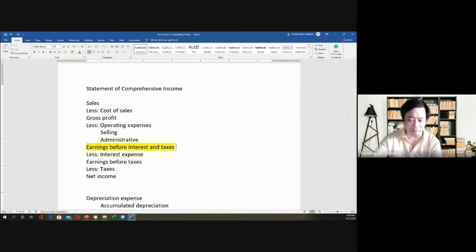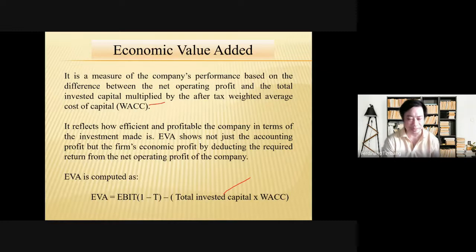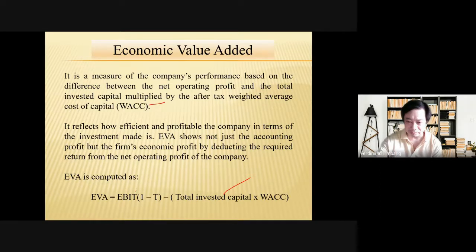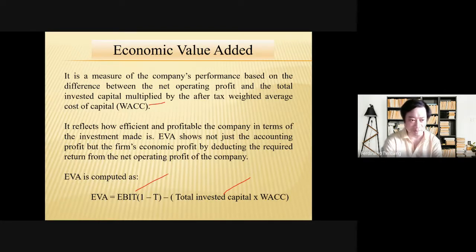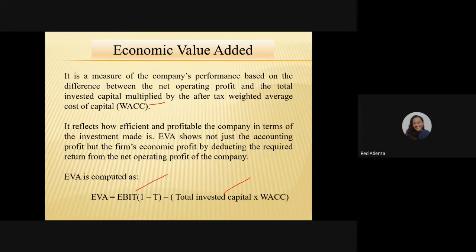The formula: EVA = EBIT times (1 minus T) minus (WACC times total invested capital). For a positive economic value added, EBIT less tax should be more than total invested capital times WACC. A student asked whether the economist's approach is less accurate than the accountant's. The answer is that it's not less accurate — it depends on the perception of the user.